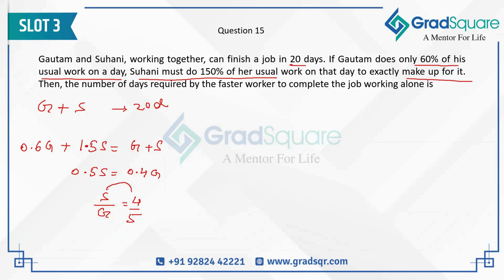So if Suhani is doing 4 units, then Gautam is doing 5 units — that's what the question is saying. Now if Suhani is doing 4 units and Gautam is doing 5 units together in a day, they are doing 9 units, and the total work gets done in 20 days.